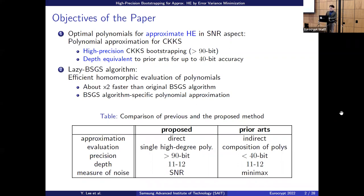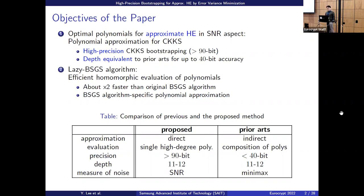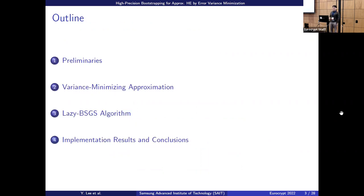We don't consider the previous talk in this table because it's something like parallel work. The depth is very similar. The measure of noise is different — prior works usually use minimax, which minimizes the maximum error, whereas ours uses SNR (signal-to-noise ratio), which is a very widely used term.